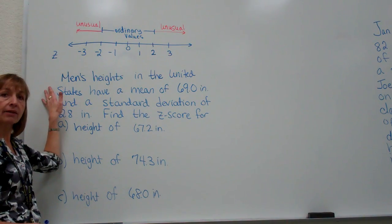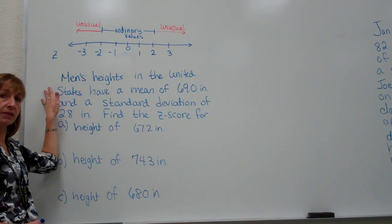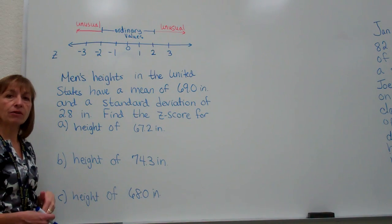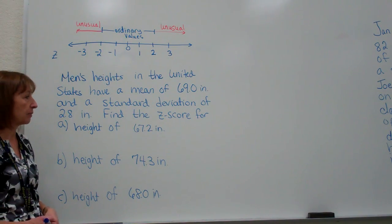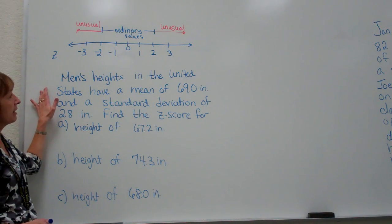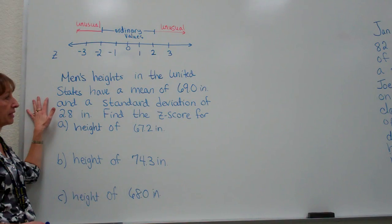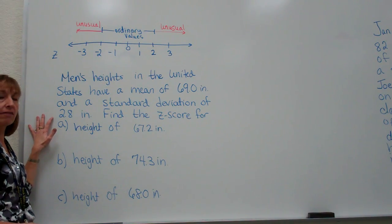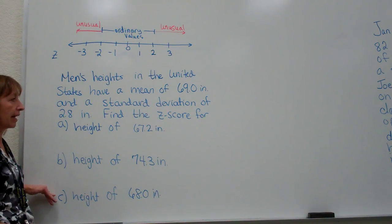Within this example, we're just going to practice how to change from what are called the raw scores, the scores of the specific data set, into the z-score, the value that tells me how many standard deviations that raw score is away from its mean. Men's heights in the United States have a mean of 69.0 inches and a standard deviation of 2.8 inches. Find the z-score for each of these three values.